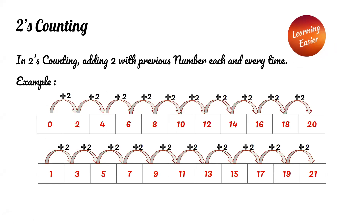Two's counting. In twos counting, we add two with the previous number each and every time. Example: zero plus two equals two, two plus two equals four, four plus two equals six, six plus two equals eight, eight plus two equals ten, and so on.